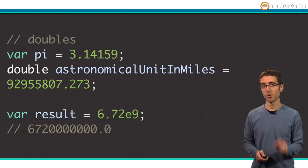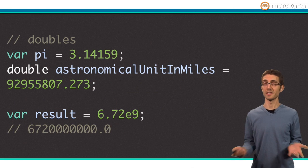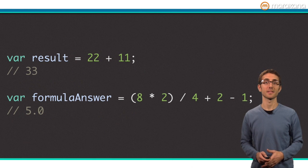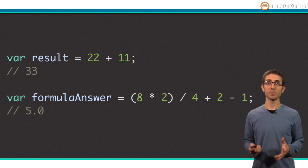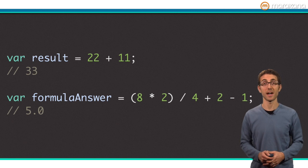Number literals with a decimal point are doubles. You can even declare a double literal with an exponent for scientific notation. Both integers and doubles are subclasses of the num class. The operators of plus, minus, multiply, and divide are actually special methods defined in the num class.